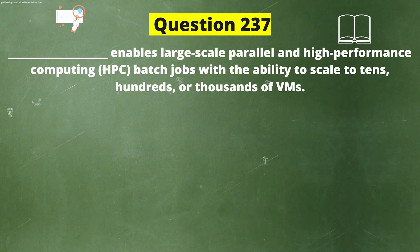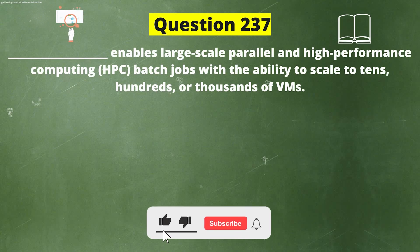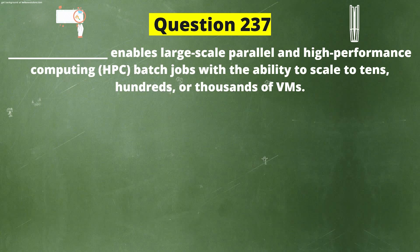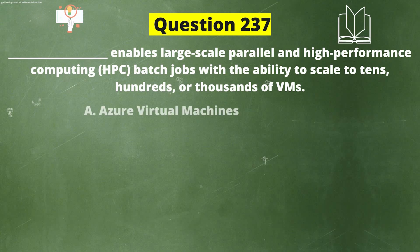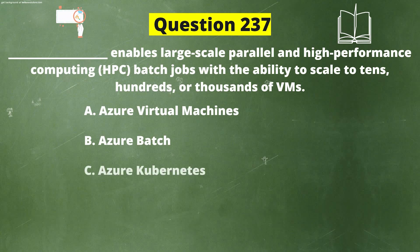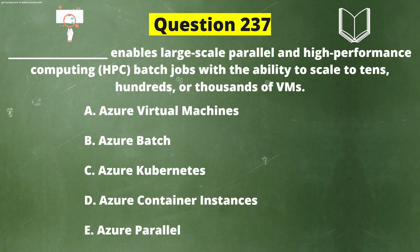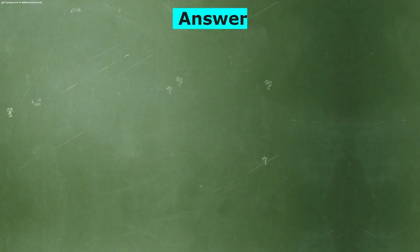Next question: Dash enables large-scale parallel and high-performance computing batch jobs with the ability to scale to tens, hundreds, or thousands of VMs. The options are: A) Azure Virtual Machines, B) Azure Batch, C) Azure Kubernetes, D) Azure Container Instances, E) Azure Parallel. The correct answer is option B, Azure Batch.